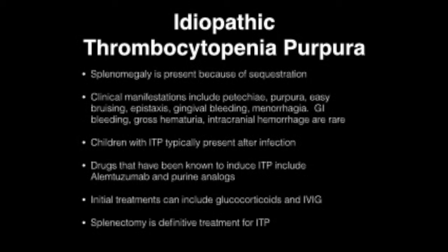Splenomegaly is present due to sequestration. Clinical manifestations include petechiae, purpura, easy bruising, epistaxis, gingival bleeding, menorrhagia, GI bleeding, gross hematuria, and rarely intracranial hemorrhage. Children with ITP typically present after infection. Drugs shown to induce ITP include cladribine and purine analogs. Initial treatments include glucocorticoids and IVIG. Splenectomy is the definitive treatment for ITP.